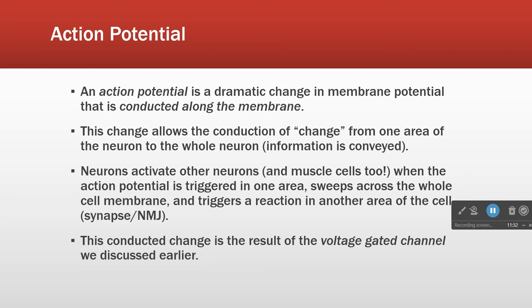An action potential is the conduction of membrane potential change from one area to another. The other place we see this play a role is in muscle cells, and we'll start on that tomorrow. The action potential is created by neurotransmitters opening channels — that's the graded potential.